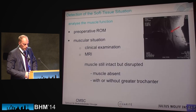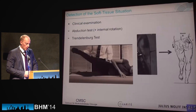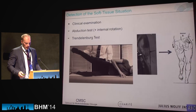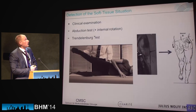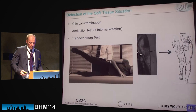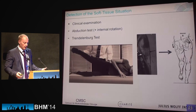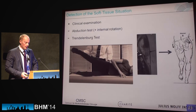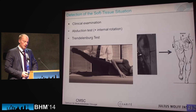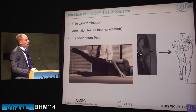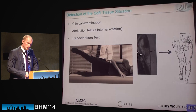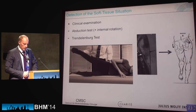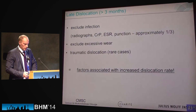Analyze the muscle function — we can do this clinically and using MRI. The clinical test: the patient lies on the side of the healthy limb and we perform an abduction test, especially in internal rotation. If the patient is able to perform this, the gluteus medius muscle is intact. If the patient can only perform this in much external rotation, that is a typical clinical sign for abductor dysfunction, beside the Trendelenburg sign. On MRI, we can see fatty atrophy of the gluteus medius muscle as a typical sign of muscular insufficiency, which can cause luxation.